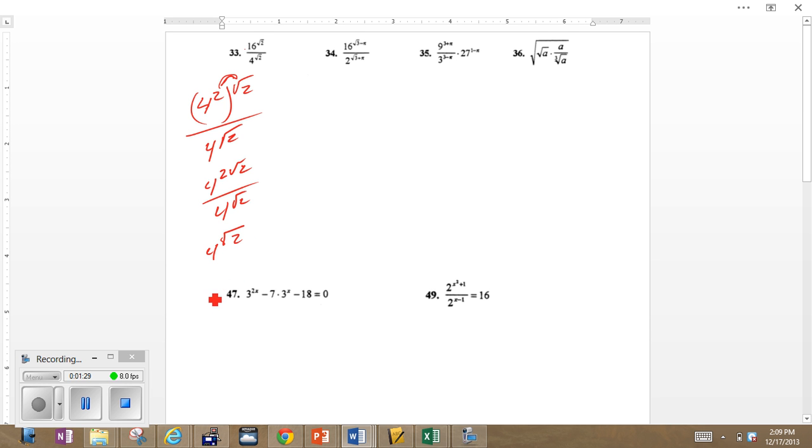Similarly, we will approach number 16. Again, 16 needs to be expressed as 2 to the 4th power, subsequently raised to the root 2 minus pi, over root 3 plus pi. So then what we have, the numerator becomes 2 to the 4 times root 2 minus pi power.